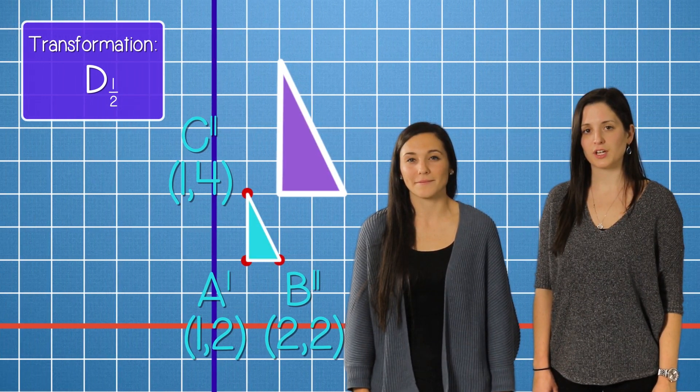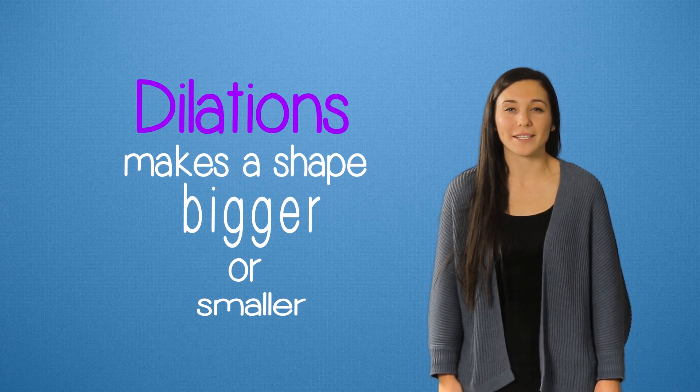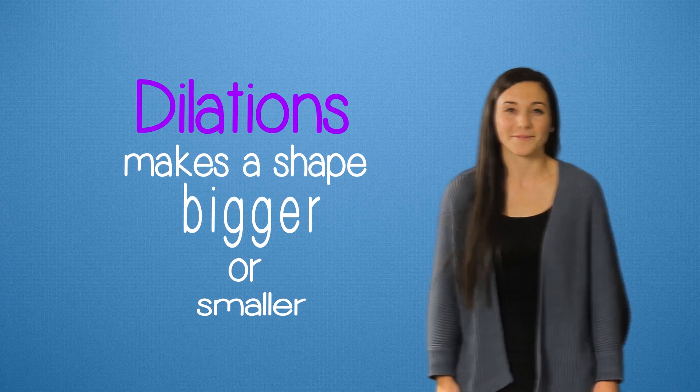Now we have the same triangle shape at half the size. And that's it! A dilation is a transformation that makes a shape bigger or smaller. Good luck!